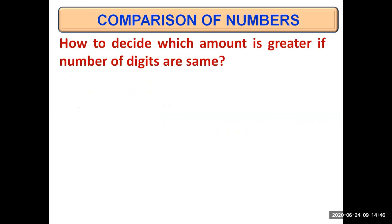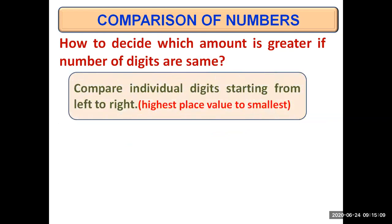How to decide which amount is greater if the number of digits are the same? When number of digits were different, we chose the amount with greater number of digits to be greater. But now if number of digits are the same, we will compare individual digits starting from left to right, starting from the highest place value towards the smallest place value.